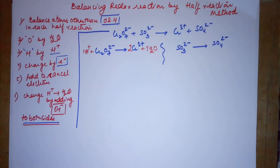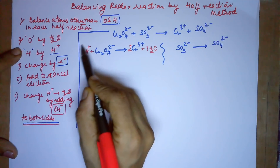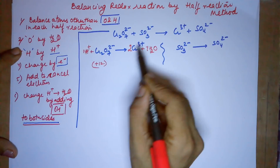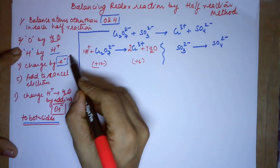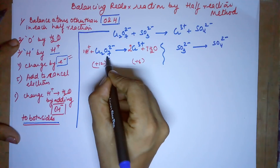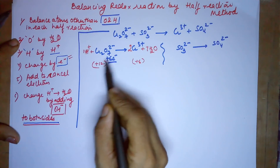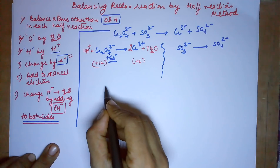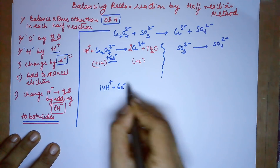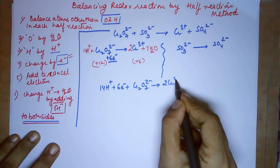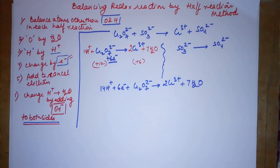Checking charges: on the left side, 14 H⁺ plus a 2⁻ charge from dichromate makes it 12 positive. On the right side, two Cr³⁺ gives 6 positive. To balance, add 6 electrons to the left side, giving 6 positive on the left and 6 positive on the right. The first half reaction is: 14 H⁺ + 6e⁻ + Cr₂O₇²⁻ → 2Cr³⁺ + 7H₂O.